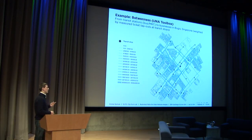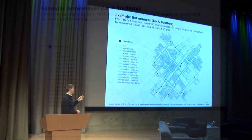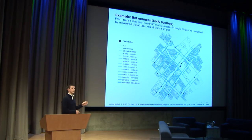Here is one example: a neighborhood in Singapore where we've calculated the betweenness index. The betweenness index assumes trips starting from certain points and ending at other points along shortest paths. We compute betweenness from public transit stops — the black dots — to all the individual retailers in a neighborhood called Bugis. We keep track of where these flows go and weigh the analysis by the actual observed ticket tap-outs at all the bus and subway stops, producing predicted pedestrian flows between buildings in that neighborhood. But again, this is along shortest paths.